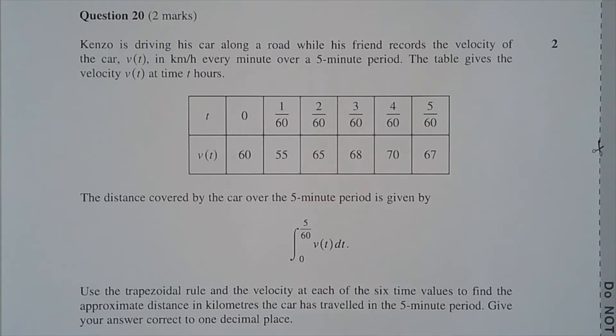Question 20. Kenzo is driving his car along a road while his friend records the velocity of the car, v of t, in kilometers per hour every minute over a 5-minute period. The table gives the velocity v of t at time t hours.